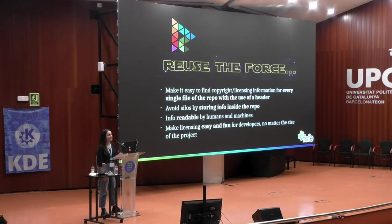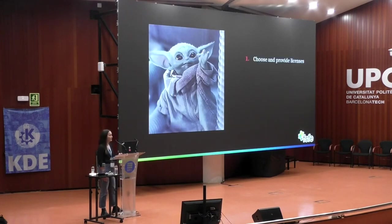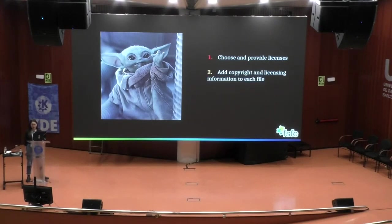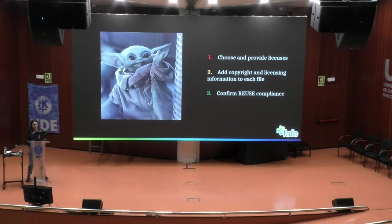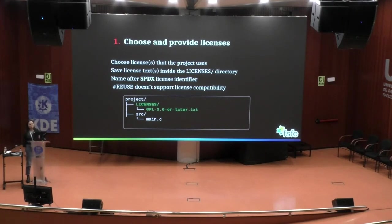REUSE is aiming to make licensing easy — and why not fun as well — for developers, no matter the size of the project. It's very simple: only three steps. The first one: you will choose and provide a license. The second: you will add copyright and license information to each file of your repository. The third: with the help of our tool, you're going to confirm that your project is REUSE compliant. For step one, we advise making a wise decision on the kind of license you want to choose, because those are basically the terms and conditions for your project.